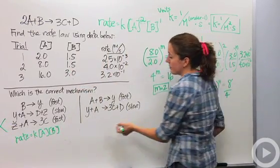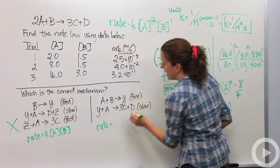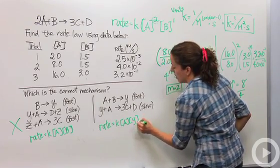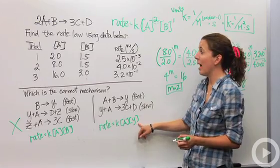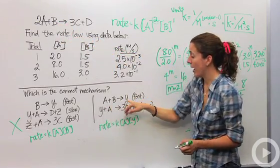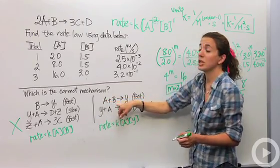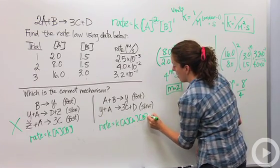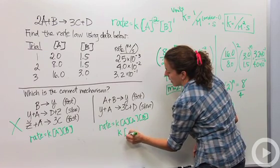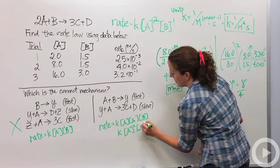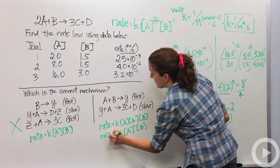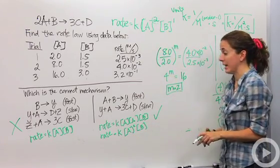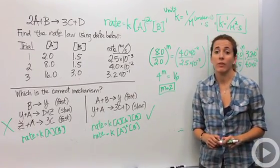So it must be mechanism 2 — let's prove it. The slow step of mechanism 2 gives rate = k[A][Y]. Again, Y can't be in our rate law, and Y was formed here from A times B. Substituting gives rate = k[A][A][B] = k[A]²[B]. Does this match our rate law? Yes — rate equals k[A]²[B]. So this must be the correct mechanism. These are the more difficult problems you'll come across when dealing with kinetics and rate laws.